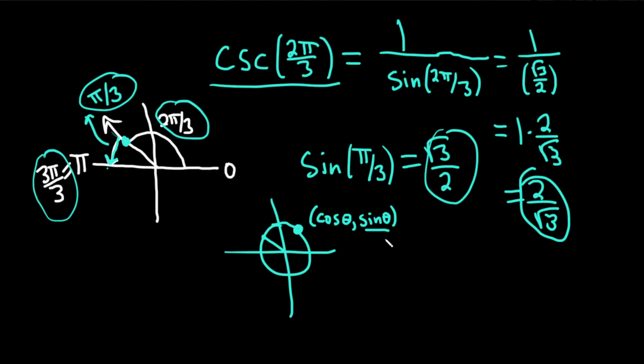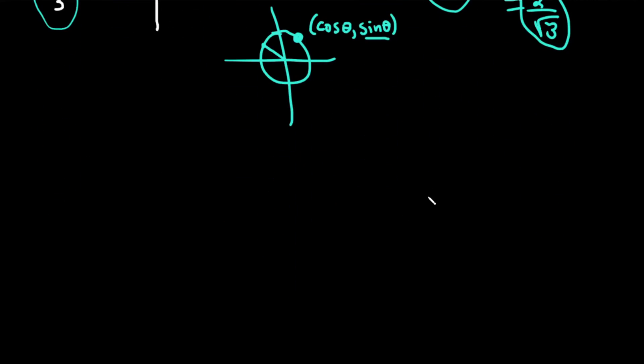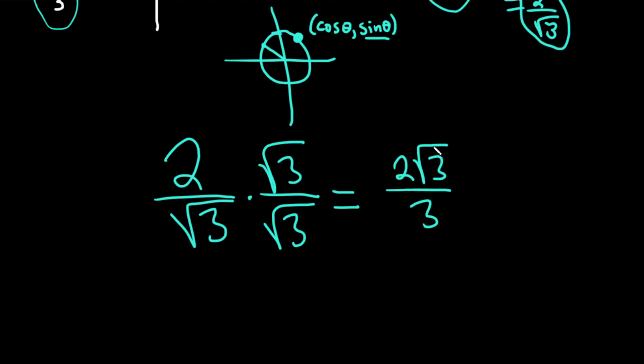You could also rationalize your answer. What that basically means is that you multiply by 1 in a clever way in order to eliminate the square root in the denominator. So if you have 2 over root 3 and you multiply by root 3 over root 3, that's just like multiplying by 1. So this is 2 times root 3, and then root 3 times root 3 is just 3. So that's another acceptable answer for this problem.